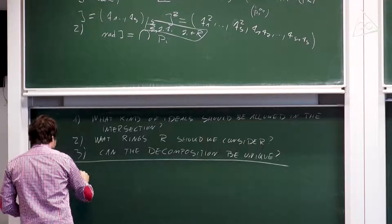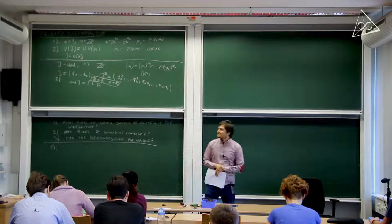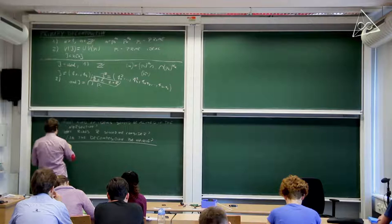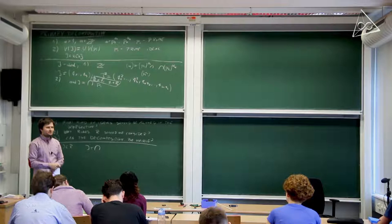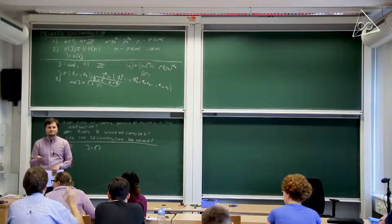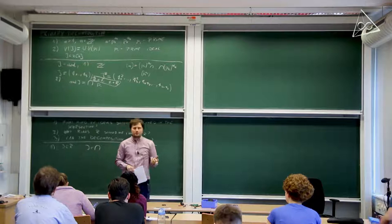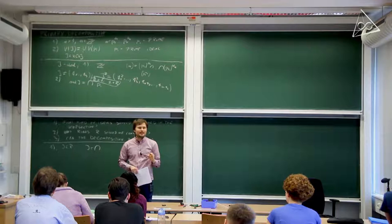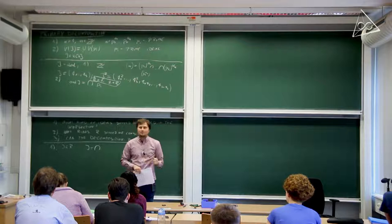Addressing question one: what kind of ideals can we hope for? A natural guess is prime ideals, especially looking at point two. But already for integers, not every ideal is an intersection of prime ideals — it's only radical ideals that can be characterized that way. So we need a larger class than prime ideals.